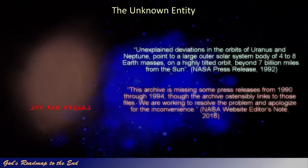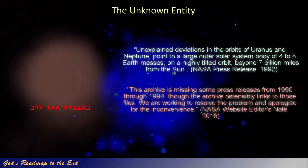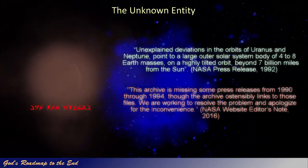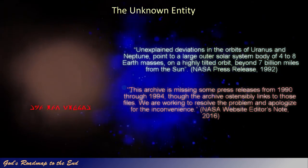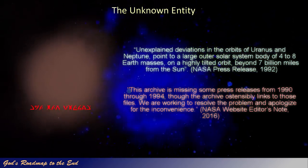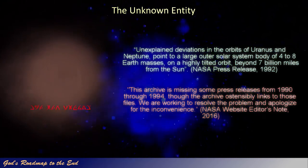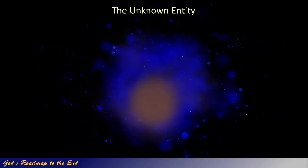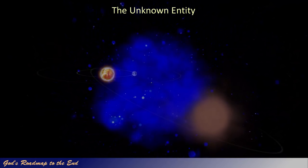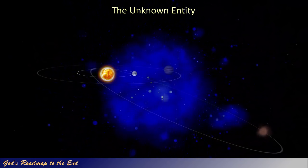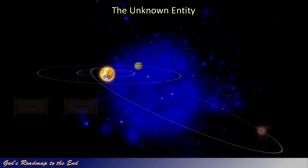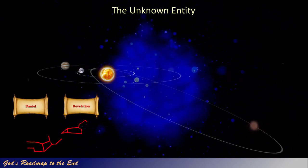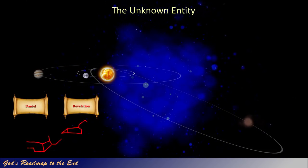The lack of information about this object in the mainstream media is certainly telling us a thing or two. It is clear that NASA has removed these articles intentionally to keep this information from the public. But what would be their motive for hiding this information, given that this was once public knowledge? What do they know that they do not want the public to know? Is this maybe because of this object's current trajectory and what it could imply for those living on earth in the years to come? I believe God's word provides this information to us in the prophecy and vision that Daniel was told to seal up.